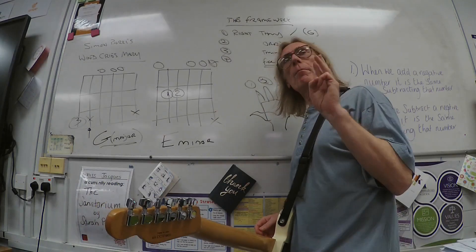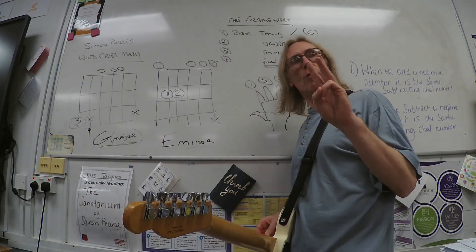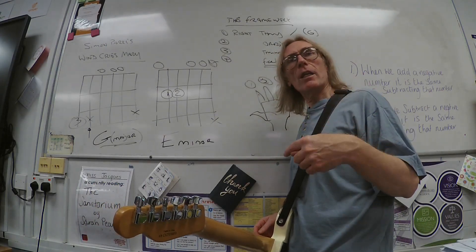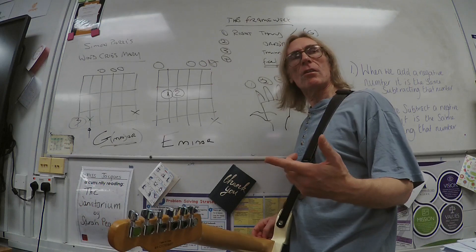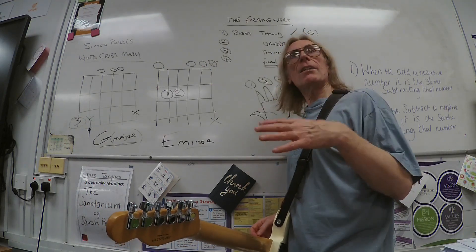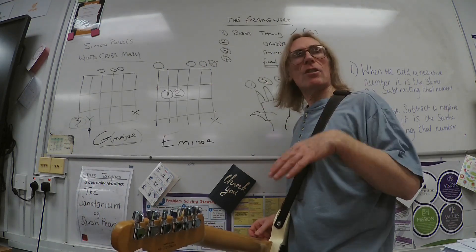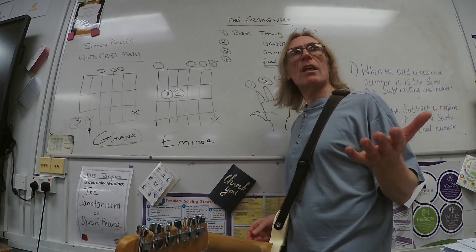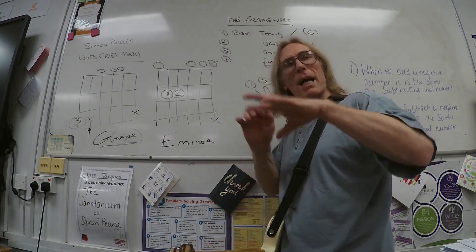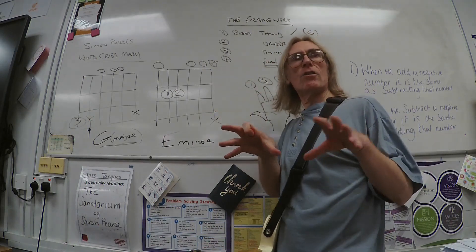There are only really three basic types of chord: major, minor, and what they call dominant. Instead of saying dominant seventh, it's just seventh — we just say seven. But that's the three basic categories of chords.